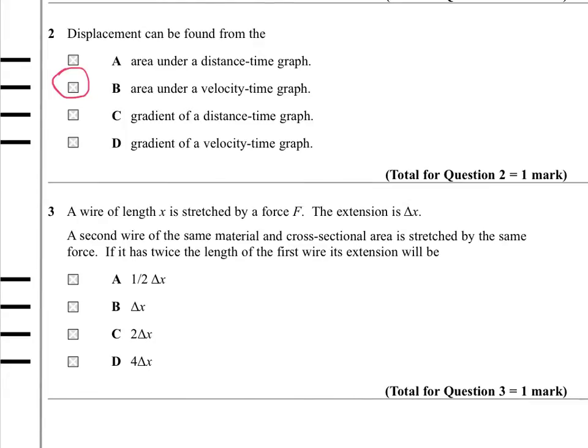Question 3. A wire of length X is stretched by a force F. The extension is delta X. The second wire of the same material, cross-sectional area, is stretched by the same force. If it has twice the length of the first wire, then its extension will be how much? Well, you can imagine this wire, this other wire, to be two copies of the first wire. So if the first wire which is giving us delta X, you can imagine both of these copies of it will extend by an amount delta X, because the force of tension acts all through the wire. So we're going to get two times delta X, which is answer C.